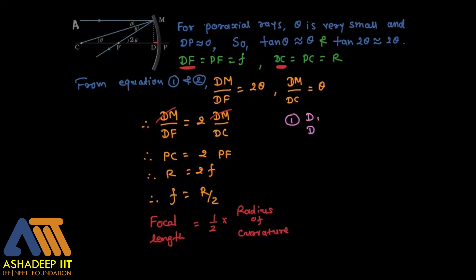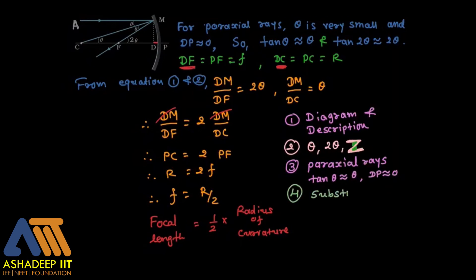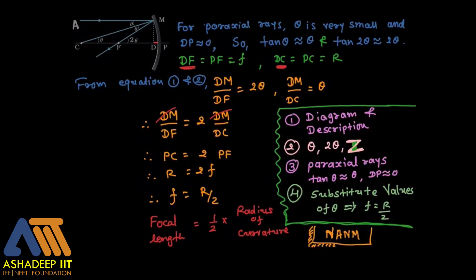To remember the entire theory: first DD — diagram and description. Then theta and 2 theta with Z for alternate interior angles. Then write paraxial rays, tan theta ≈ theta, and set DP equal to zero. Finally substitute values to get f equals R over 2. Remember: no arrows, no marks.